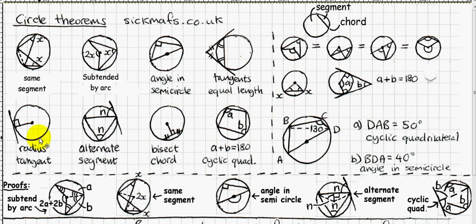The next rule is really simple: a radius meets a tangent at 90 degrees. That's it — there's not much more to say about that one.